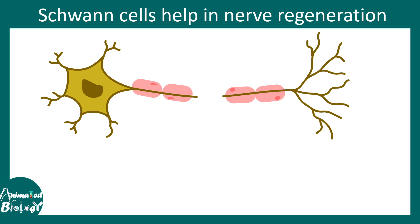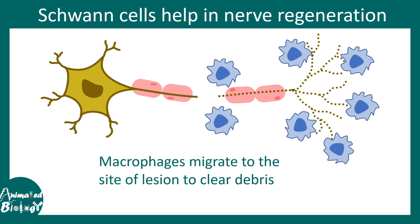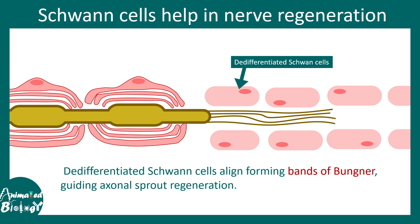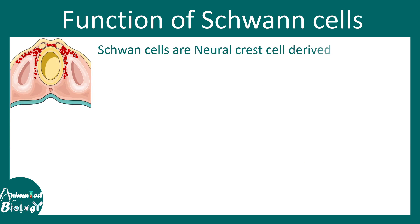Let's look at the regeneration of a new peripheral nervous system neuron and how Schwann cells are important for that. When there is a neuronal injury, the distal part would eventually be degraded and cleared by the macrophages. Later on, the Schwann cells take an important role in guiding the process. De-differentiated Schwann cells align in a specific band-like fashion known as bands of Büngner, forming a passageway where axonal sprouts can grow and regenerate the neuron again.